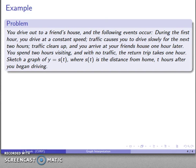How about producing a graph from the description of something? We drive up to a friend's house, and the following events occur. During the first hour, we drive at constant speed, then we hit traffic and have to drive slowly for the next two hours. Traffic clears up, and we arrive one hour later. I spend two hours visiting, and with no traffic, the return trip takes one hour. Let's sketch a graph of y equals s(t), where s(t) is the distance from home t hours after we begin driving.